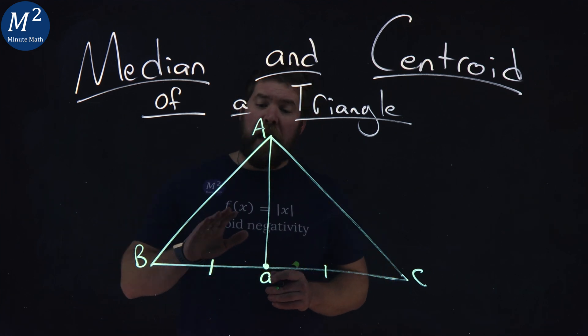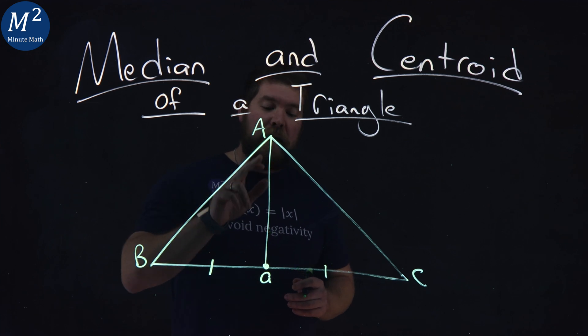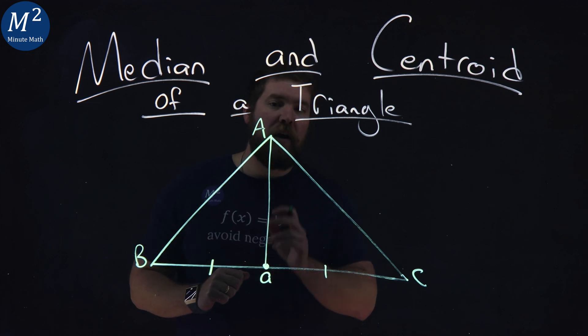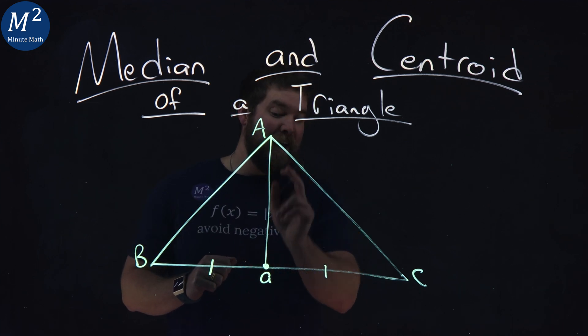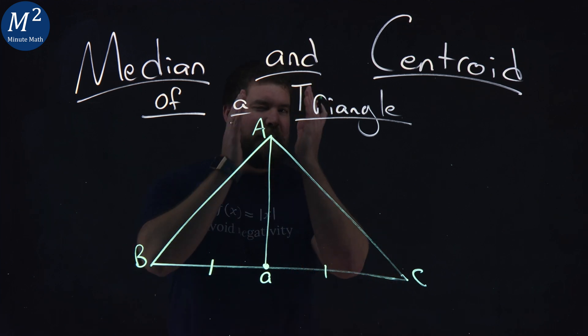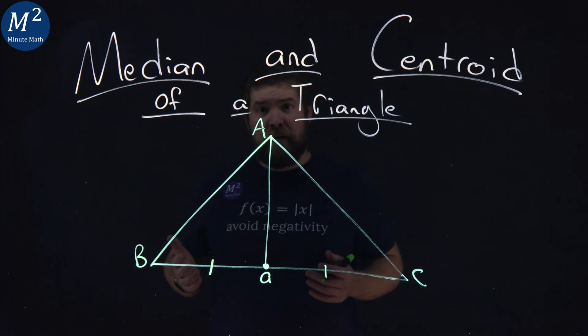Cool fact here, the area of B, little a is the same exact area of A, little a to C. It cuts it exactly in half, and that's the median of a triangle.